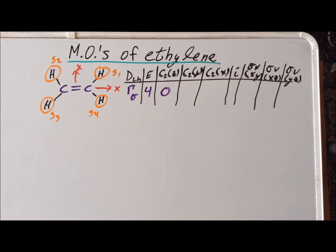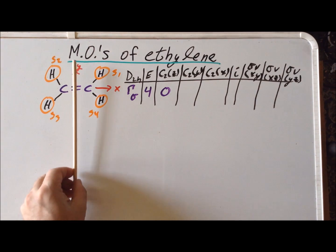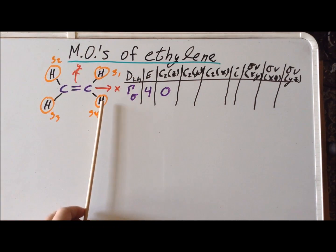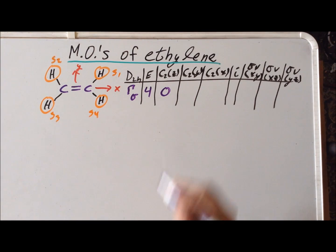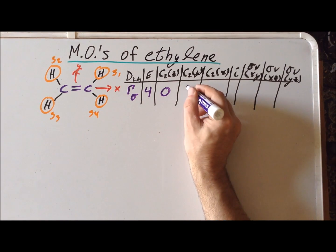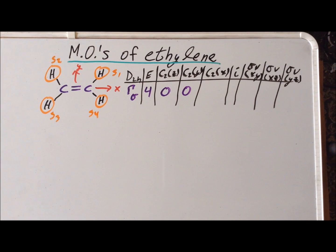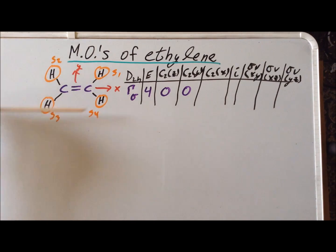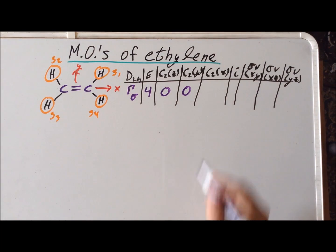The C2 about the y-axis flips S1 to S2 and S4 to S3, so zero orbitals stay put. For the x-axis, we have a C2 rotational axis, and that takes S4 to S1 and S3 to S2. So the character is zero.